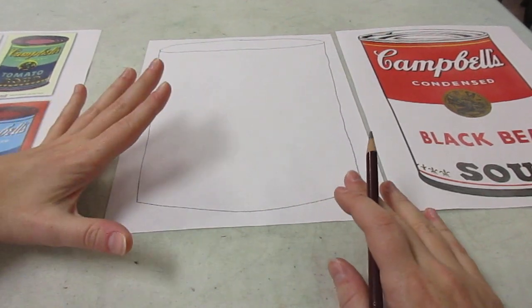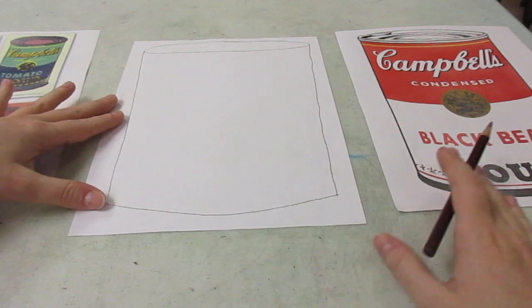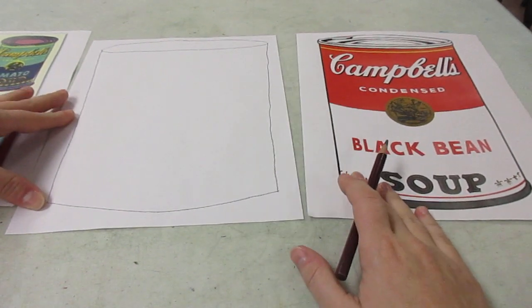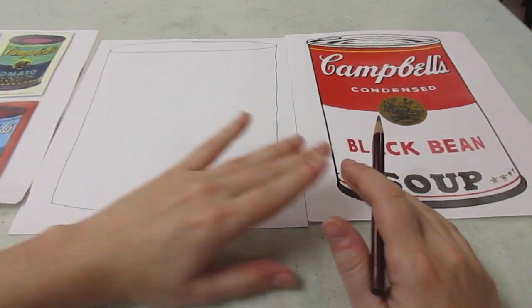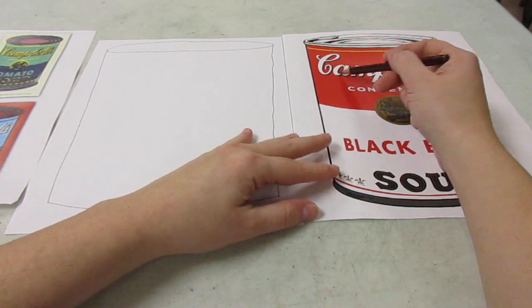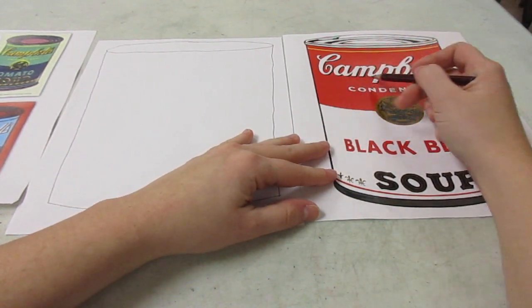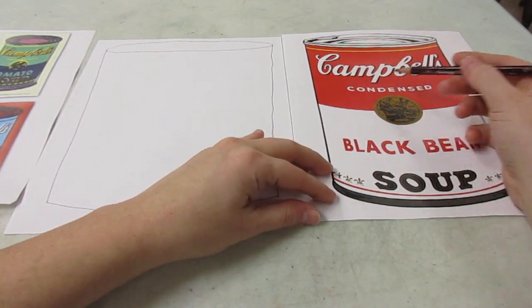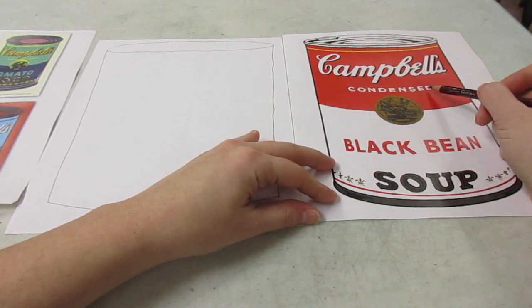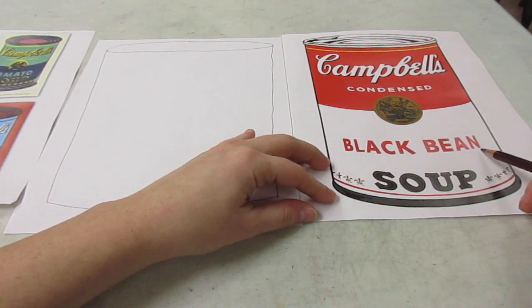Now, there's lots of different kinds of cans. Andy Warhol did Campbell's soup cans, so we're gonna try to draw Campbell's. So we're gonna have to try to draw the logo. This says Campbell's, and we're gonna have to try to write the words. This says condensed black bean soup.